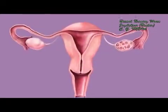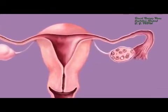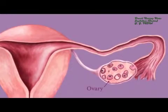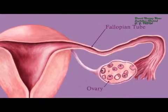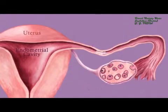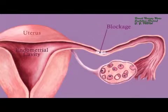During fertilization, the egg travels from the ovary through the fallopian tube and into the endometrial cavity of the uterus. Conception cannot occur if a blockage prevents the egg from traveling its normal path through the fallopian tube and into the endometrial cavity.